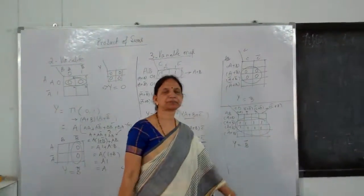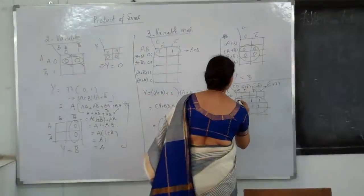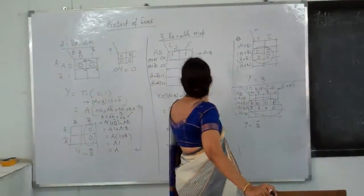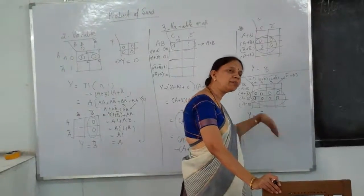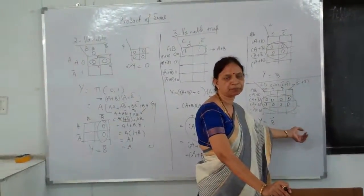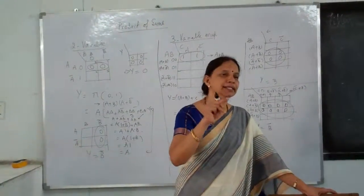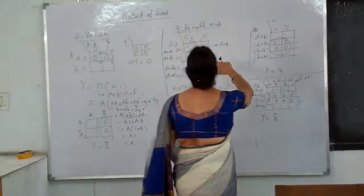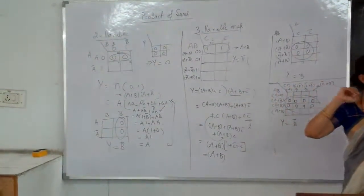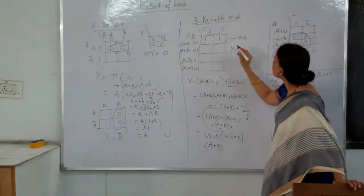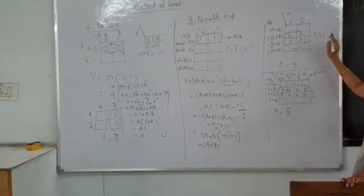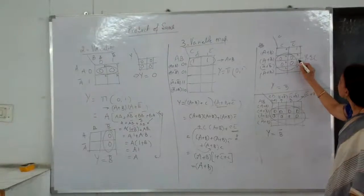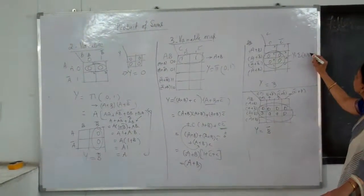So once again, suppose I take this group — B-bar is not changing here and D is not changing, so you write it as B-bar·D, which means the same. From here to here, (C + D) and (C-bar + D). So you write it as B-bar and D combined.